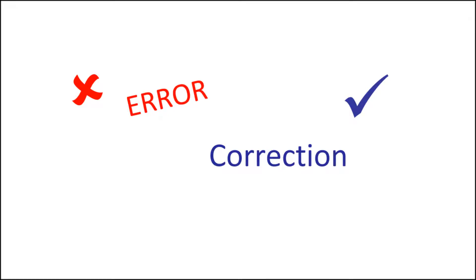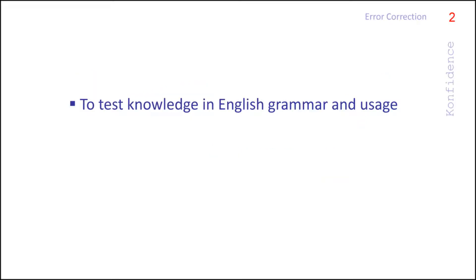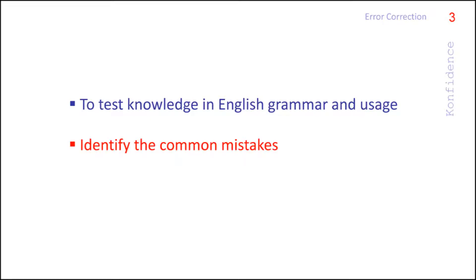Error correction is one of the most common types of questions we can see in a verbal aptitude test. The purpose of this question is to test our knowledge in English grammar and usage. Though this seems to be a tough task, it is not as difficult as we think. First of all, we should identify the areas which are fewer in number where we make mistakes in English.